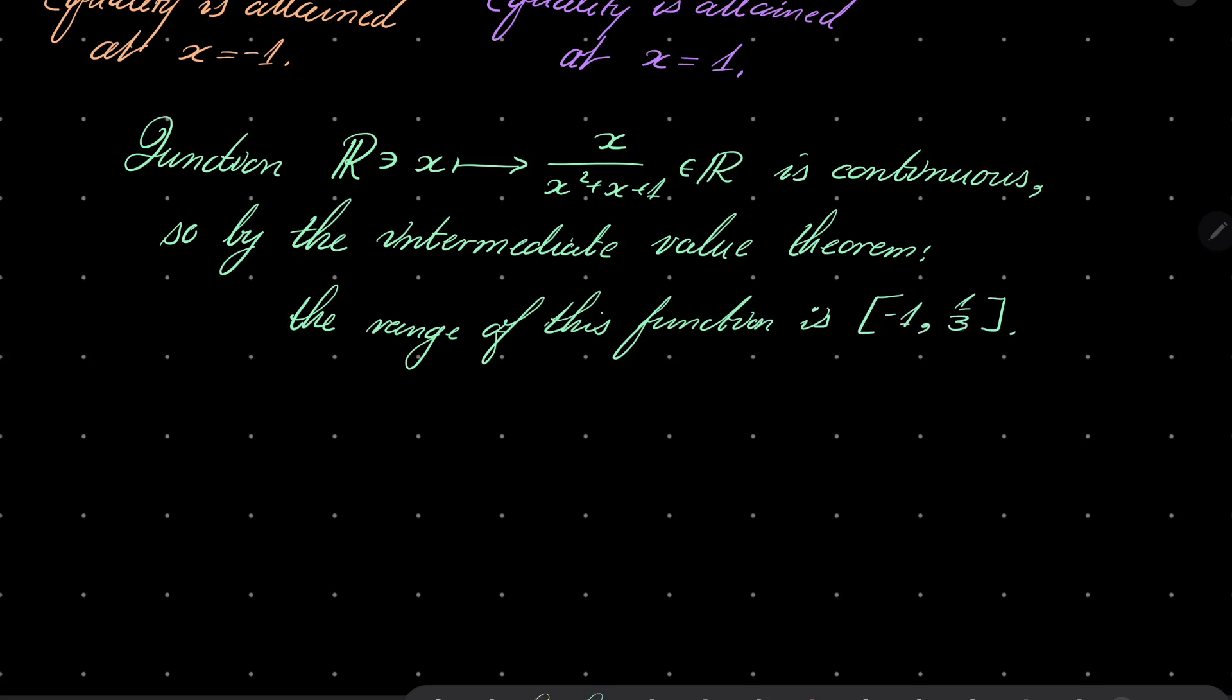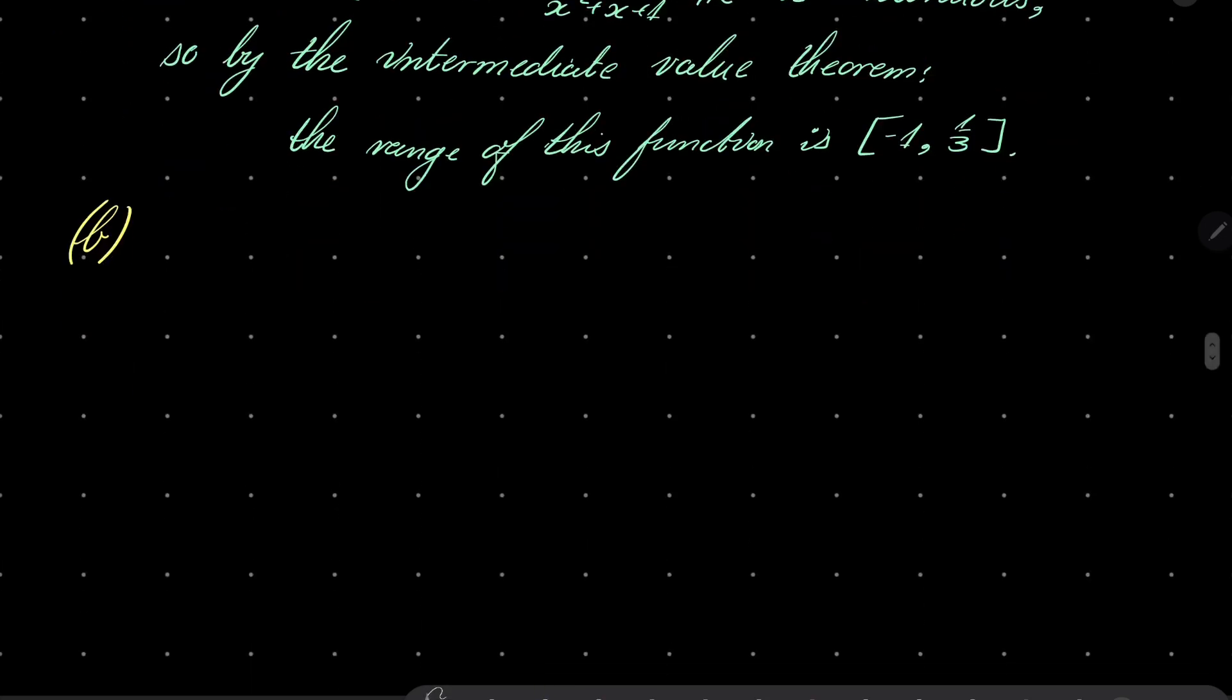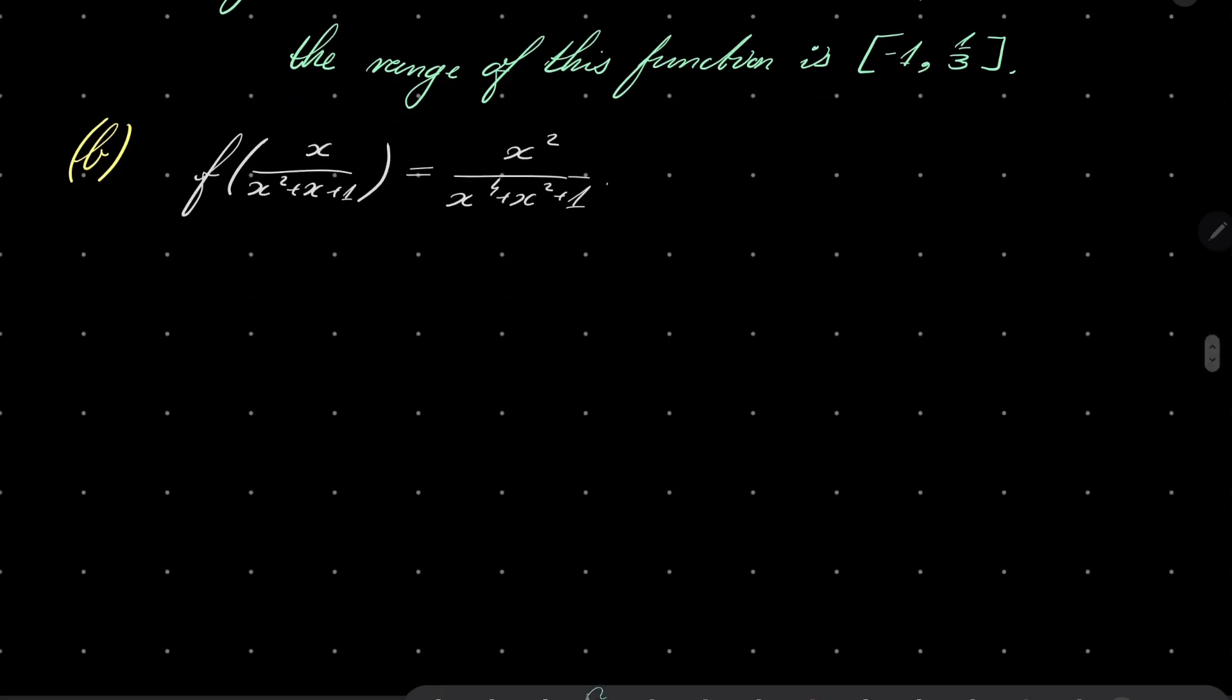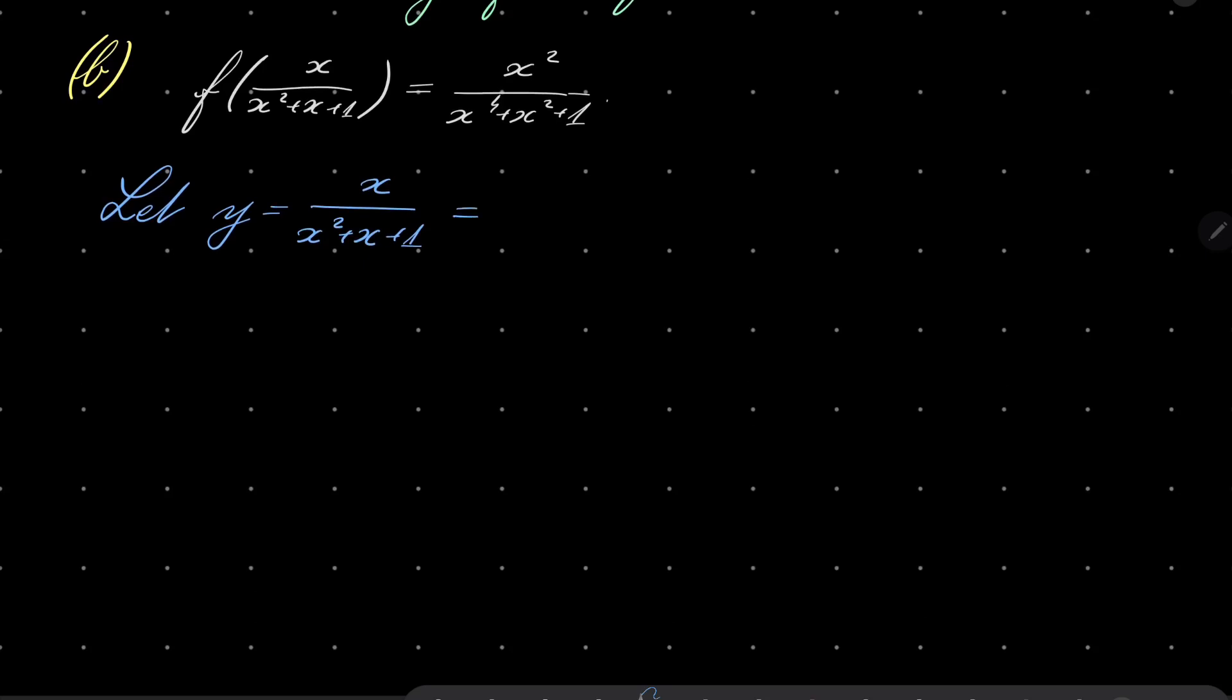Right, now let's move to part B. In part B, let's recall that we wish to solve this functional equation. Now what I will do is I will set y to be equal this thing right here. Let y be equal x over x squared plus x plus 1, and notice that it can be written as 1 over x plus 1 plus 1 over x, which in turn can be written as x plus 1 over x minus 1, of course for x which is not 0.